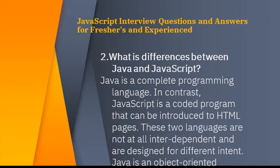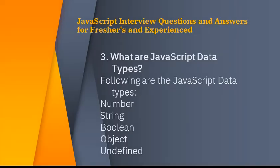What is the difference between Java and JavaScript? Basically for beginners and freshers, they mostly ask this question. Java is a complete programming language, whereas JavaScript is a coded programming language that can be introduced into HTML pages. These two languages are not interdependent and are designed for different purposes.